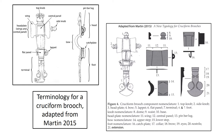Let's start with the cruciform brooch, which is extremely standardised and therefore the easiest to get your head around. The cruciform brooch is defined as a bow brooch with a horse head terminal — you can see the horse's head at the bottom with its eyes and nostrils. The terminology used here has been adapted from Toby Martin's PhD and book on cruciform brooches, which is a fantastic piece of work. There are some variations from Toby's terms, so we will go through each part in turn.